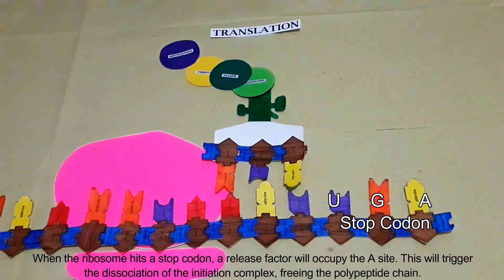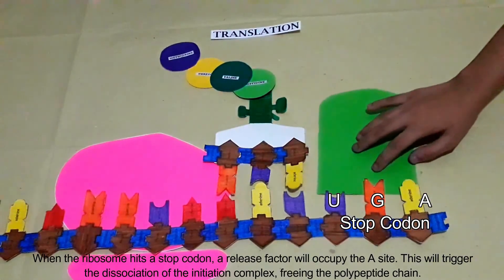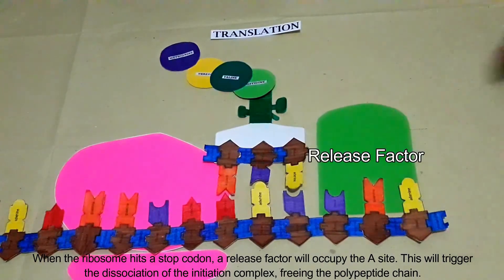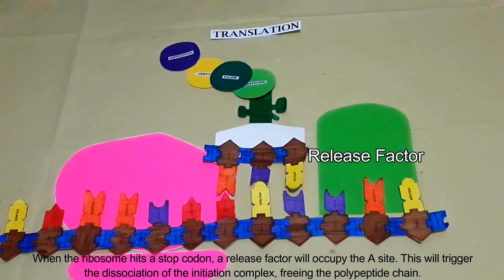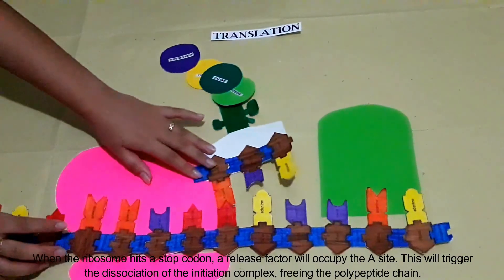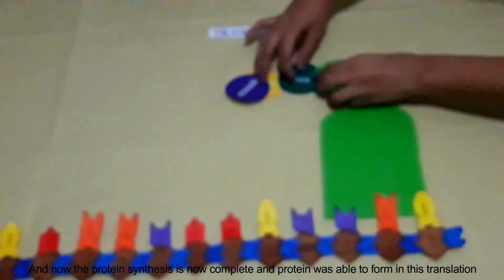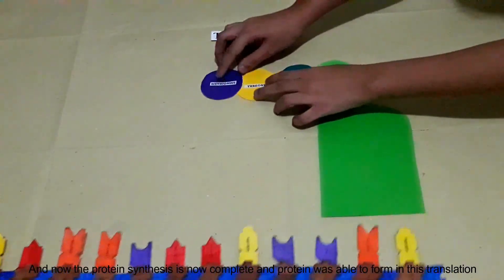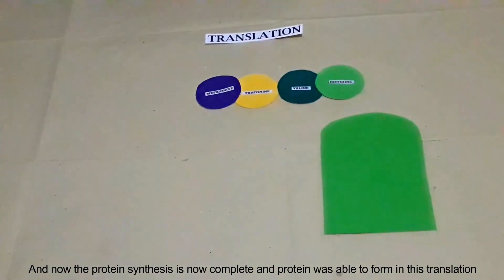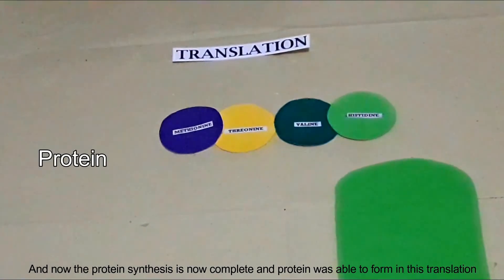When the ribosome hits a stop codon, a release factor occupies the A site. This triggers the dissociation of the initiation complex, freeing the polypeptide chain. Protein synthesis is now complete and a protein is formed.